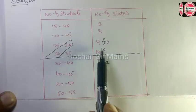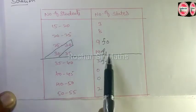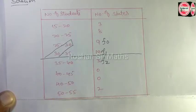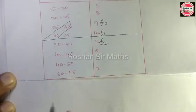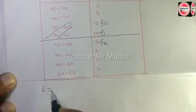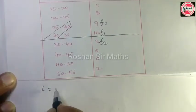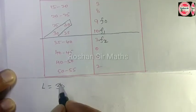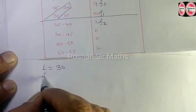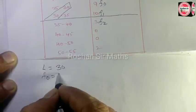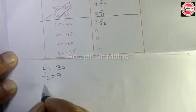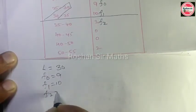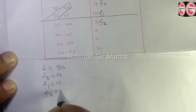सबसे बड़े number को एक line मारेंगे, इसको देंगे F, ऊपर वाला F0, नीचे वाला F2। उसी तरह यहाँ पर L। तो यहाँ पर लिखेंगे: L is equal to 30, F0 is equal to 9, F1 is equal to 10, F2 is equal to 3.